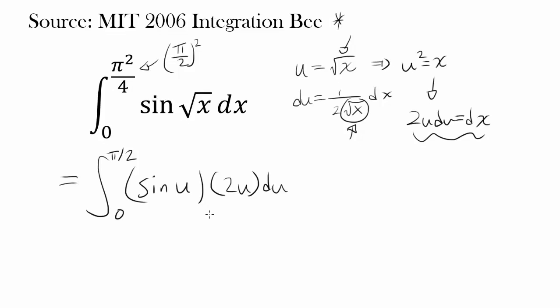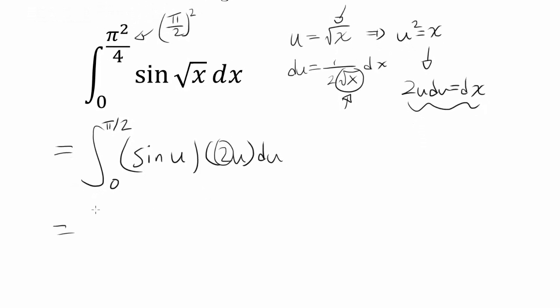So we have to integrate by parts. So let's get this 2 out of the way. So you have 2 times integral from 0 to pi over 2 of u sine of u du. What's integral of u sine of u du? Well, that's straightforward application of integration by parts because you have algebraic function multiplied to trigonometric function.